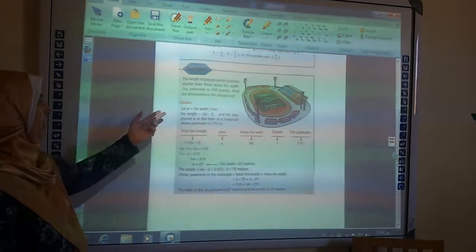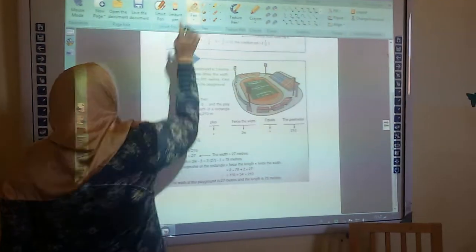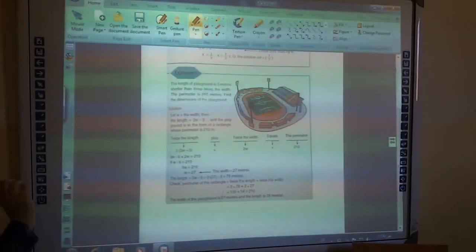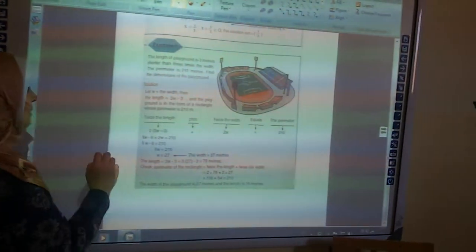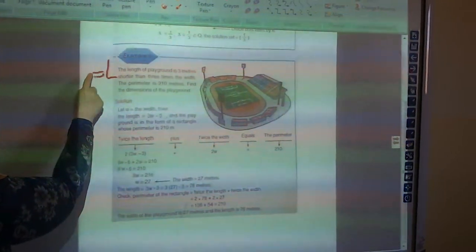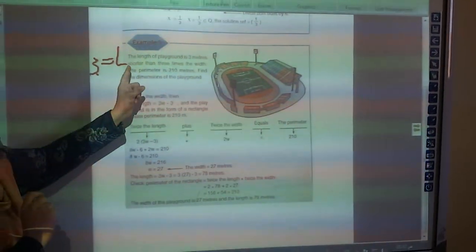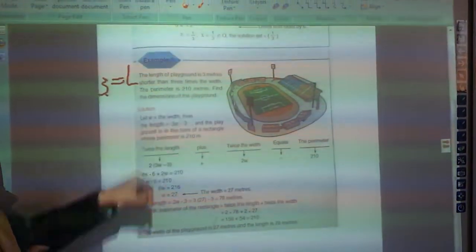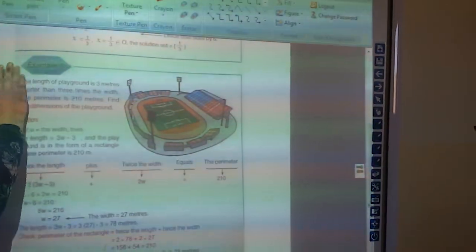Here we have a word problem. Take care of the word problem because each word has a meaning. Here it's telling me the length of the playground. Length, it means L, is 3. So L is 3, 3 meters shorter than 3 times the width. Let's see this one, it's complicated.